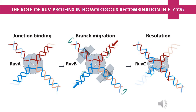RuvA protein is a Holliday junction-specific DNA binding protein that recognizes the structure of the DNA junction regardless of its specific DNA sequence. RuvA recognizes and binds to the Holliday junction and recruits the RuvB protein to this site. RuvB is a hexameric ATPase similar to the hexameric helicases involved in DNA replication. RuvB ATPase provides the energy to drive the exchange of base pairs that move the DNA branch. Structural models for RuvA-RuvB complexes at a Holliday junction show how a tetramer of RuvA together with two hexamers of RuvB work together to power this DNA exchange process. So here RuvA and RuvB proteins together form a molecular motor involved in branch migration.